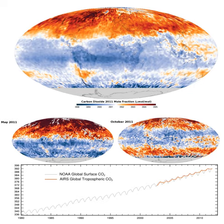A 2017 article states that increased CO2 levels may have a negative impact on the nutritional quality of various human food crops, by increasing the levels of carbohydrates such as glucose, while decreasing the levels of important nutrients such as protein, iron, and zinc. Crops experiencing a decrease in protein include rice, wheat, barley and potatoes.